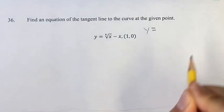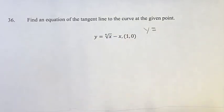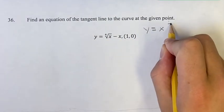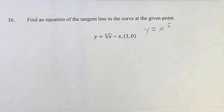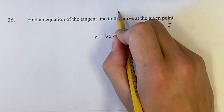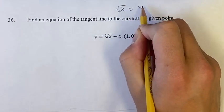We're just rewriting this right here. We have y equals, and the fourth root of x is equivalent to x to the one-fourth. In the same way that square root of x is x to the one-half.